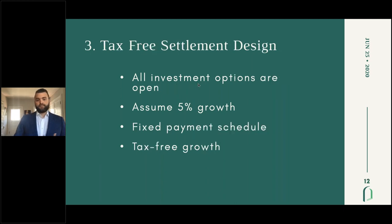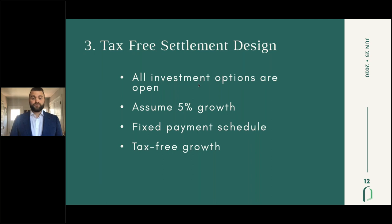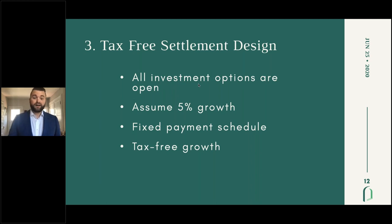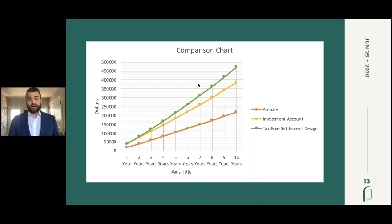What some companies have been able to do is combine both options. The tax-free settlement design has all your investment options open — we assume the same 7% to 8% growth, though we model at only 5%. And there's a fixed payment schedule, so your client is never able to access all their money all at once; it's paid out to them over time. And because of that, the growth on the account is tax-free. On a million dollars, the modeling for this is pretty incredible.